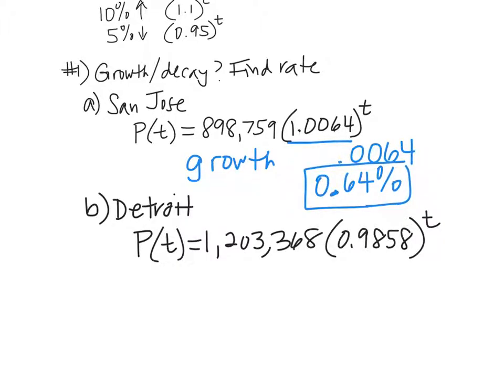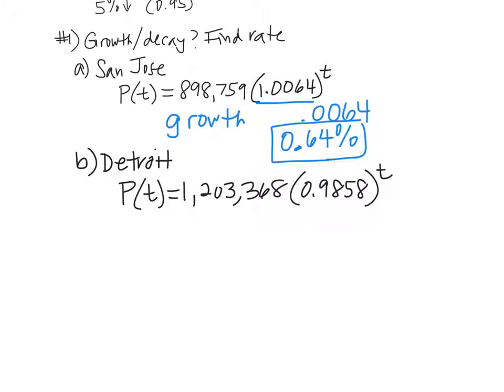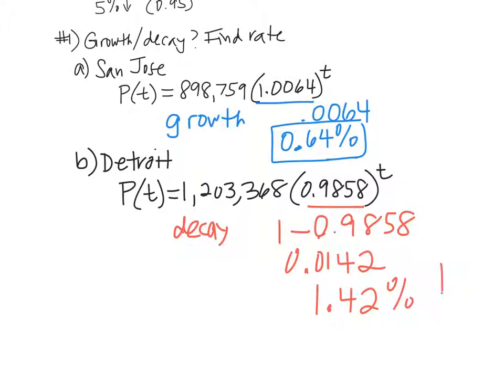So all you got to do is look in here. And if it's above 1, it's a growth. And how much is it growing by? This is kind of weird. It's growing by 0.0064. We want to put this into a percentage. So we move the decimal to the right. And it's growing at a rate of 0.64%. That's not a lot. But it's still growing. Not even 1% growth. Let's look at Detroit. Detroit growth or decay? Decay. This number is under 1. It's between 0 and 1. So that would be decay.